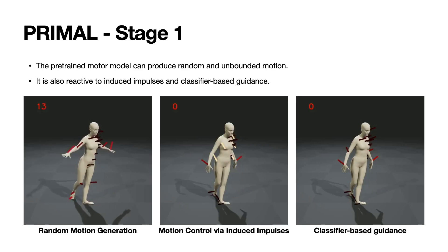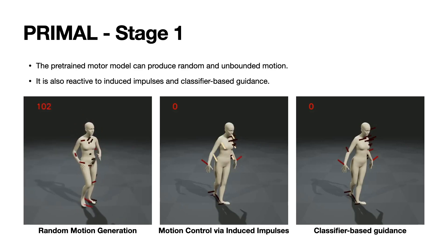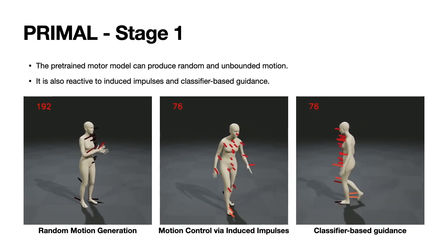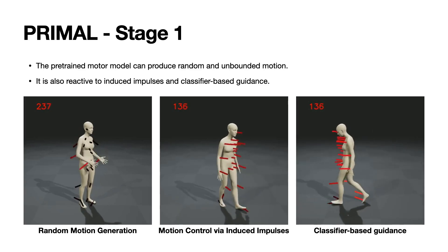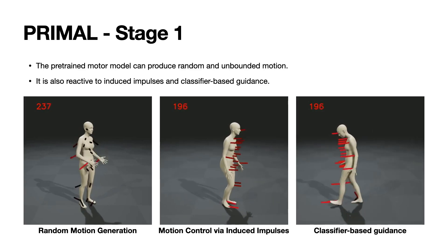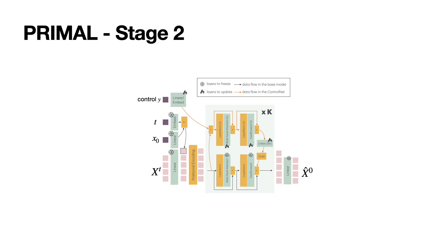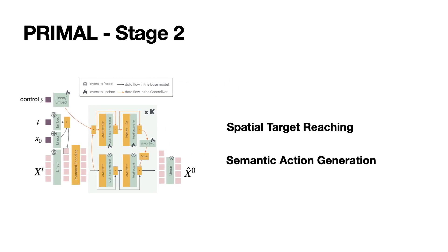The pre-trained motor model can produce random and unbounded motion. It is also reactive to induced impulses and classifier-based guidance. In the second stage, we use an adaptation method based on control net for different avatar-related tasks. In this work, we focus on spatial target reaching and few-shot semantic action generation.